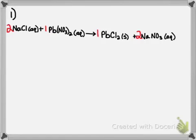The next step is to figure out the complete ionic equation. The complete ionic equation involves taking these compounds and breaking them up into their ions, or their strong electrolytes. Starting with NaCl, we have 2 Na's, each with a charge of plus 1 — you can get that from the periodic table. And each Cl, we also have 2 of because of the coefficient, and each Cl has a minus 1 charge and is aqueous.